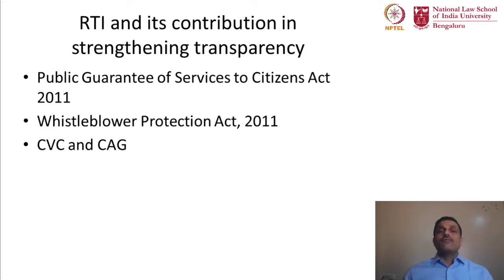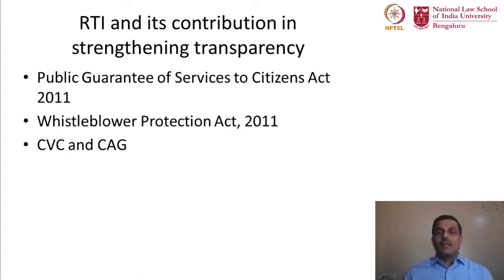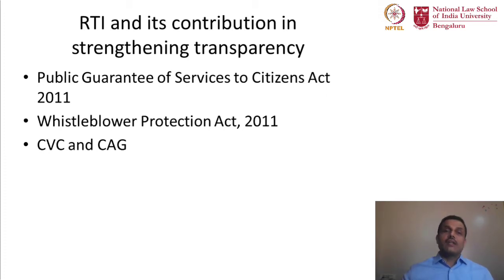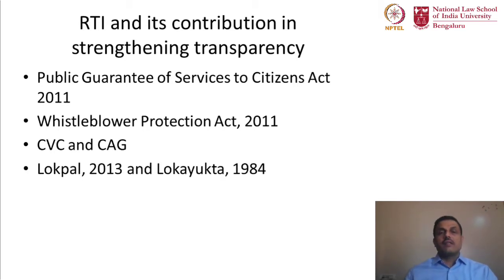After the enactment of the Right to Information Act, the way the CVC has functioned and the CAG has contributed in exposing scams or corruptions — for example, the prominent 2G scam — has been significant. The CVC keeps an eye on public expenditure, on public awarding of contracts, and on how public institutions follow fair and reasonable rules. Citizens now are also an additional watchdog under the RTI, and through RTI, the CVC and CAG also get a kind of strengthening provision.